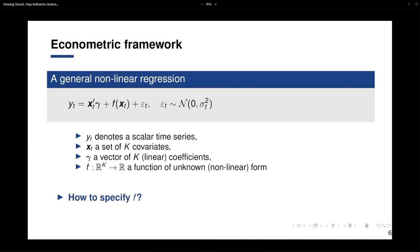This is our model in a bit more detail. We have a general nonlinear regression with a linear part — x prime gamma — and a nonlinear part, which is the function f on x of unknown form. We have an error term assumed to be normally distributed with zero mean and time-varying variance. The main question is how to model or specify f.